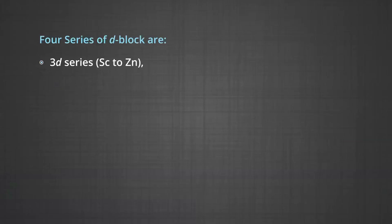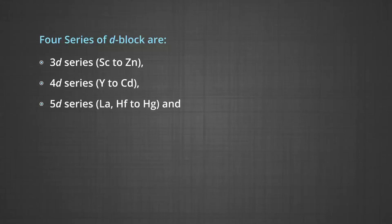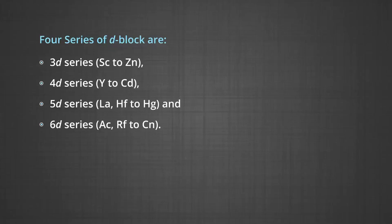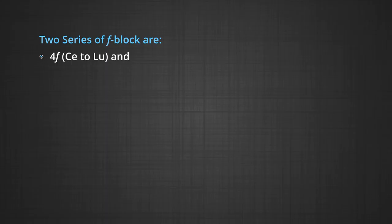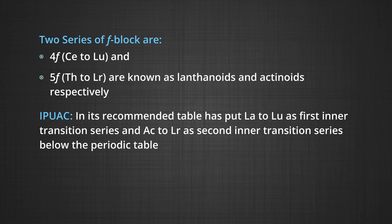In the figure you can see that there are 4 series of D block. The first is the 3D series from scandium to zinc, 4D series from yttrium to cadmium, 5D series from lanthanum and hafnium to mercury, and 6D series from actinium and rutherfordium to copernicium. The two series of inner transition metals are the 4F series from cerium to lutetium and the 5F series from thorium to lutetium, known as lanthanides and actinides respectively.